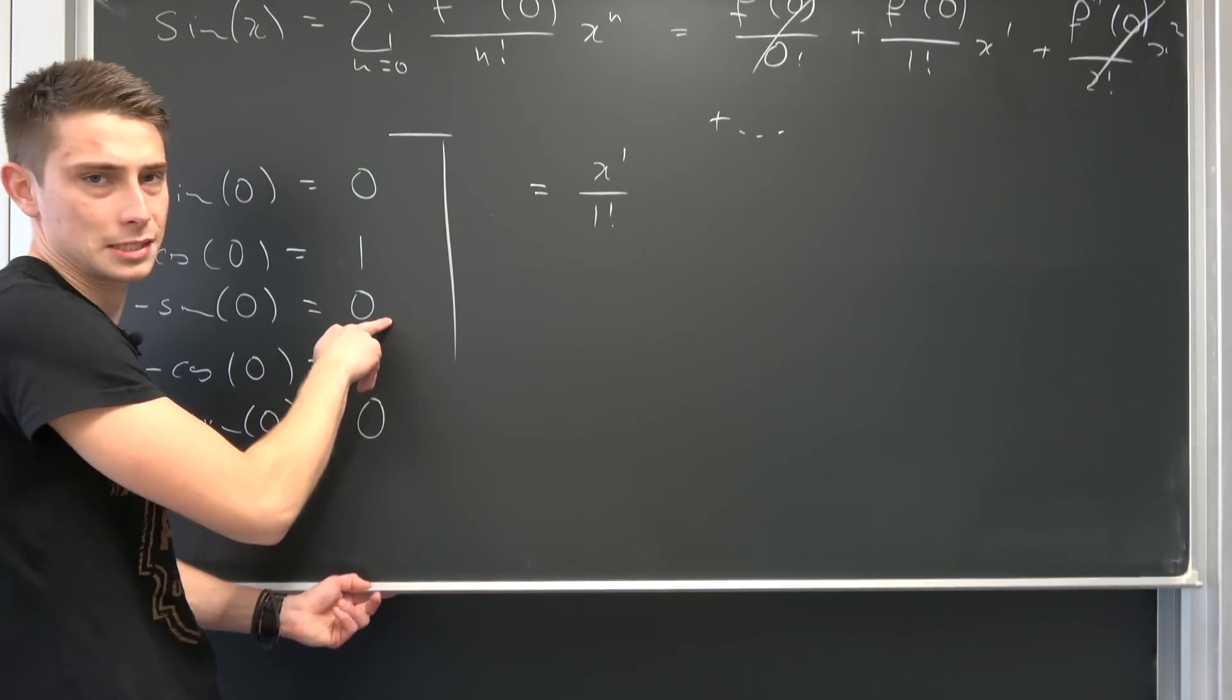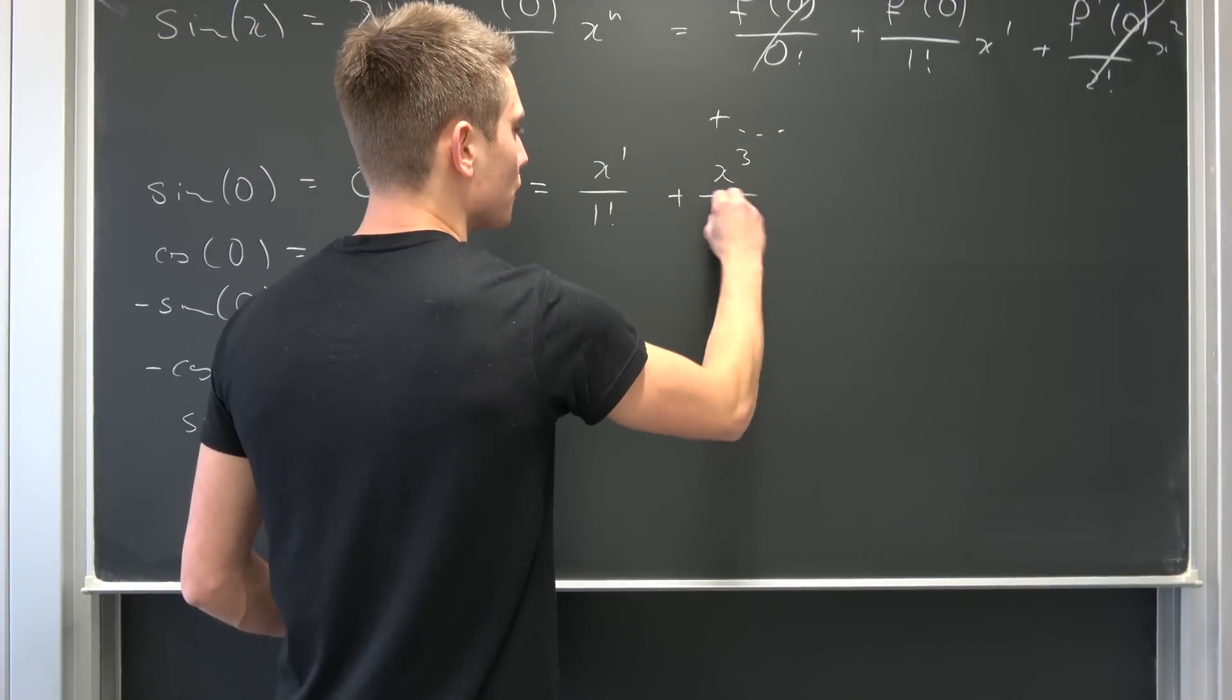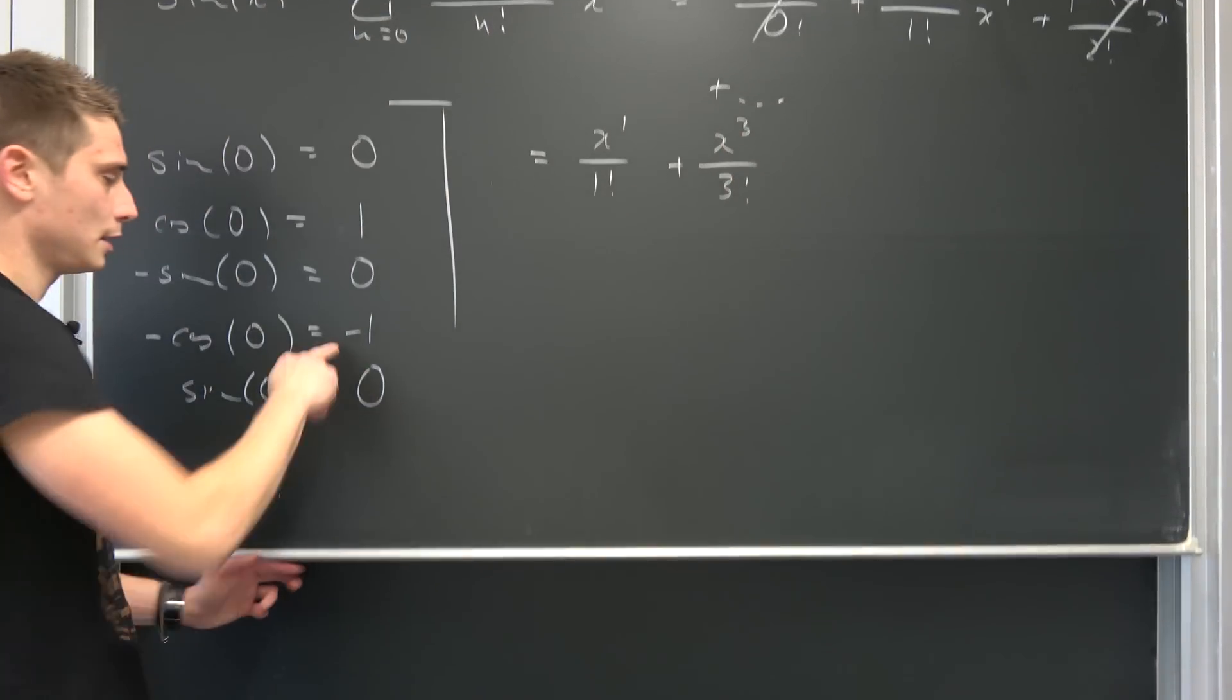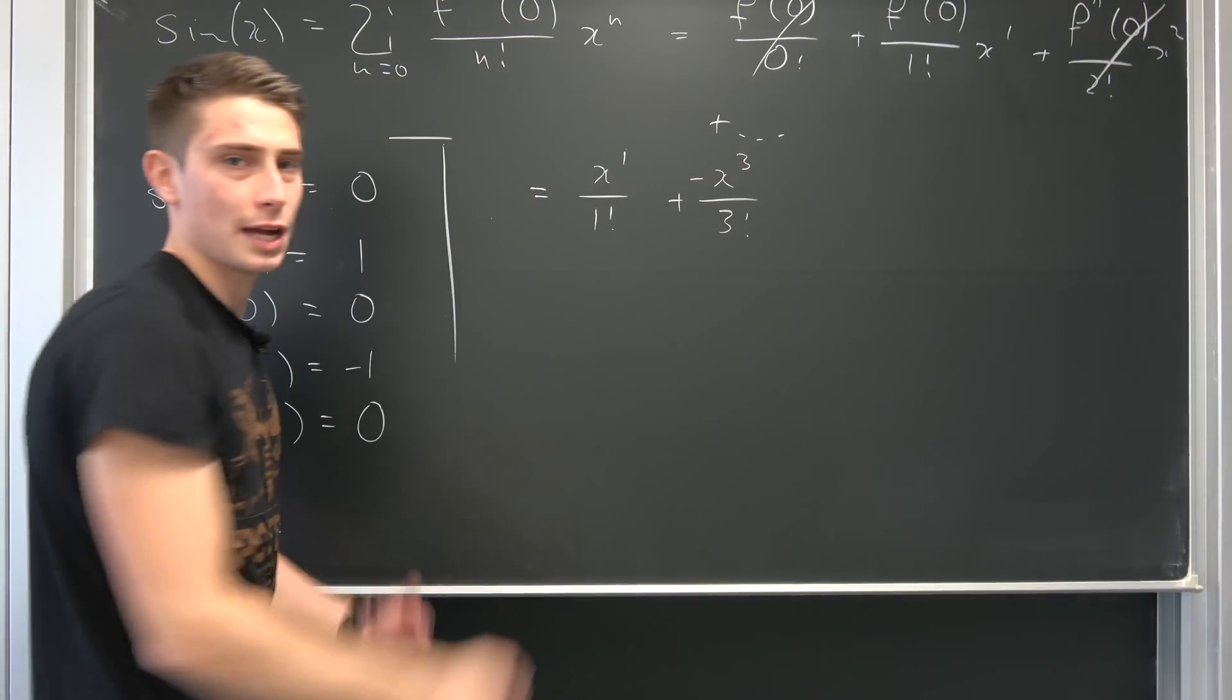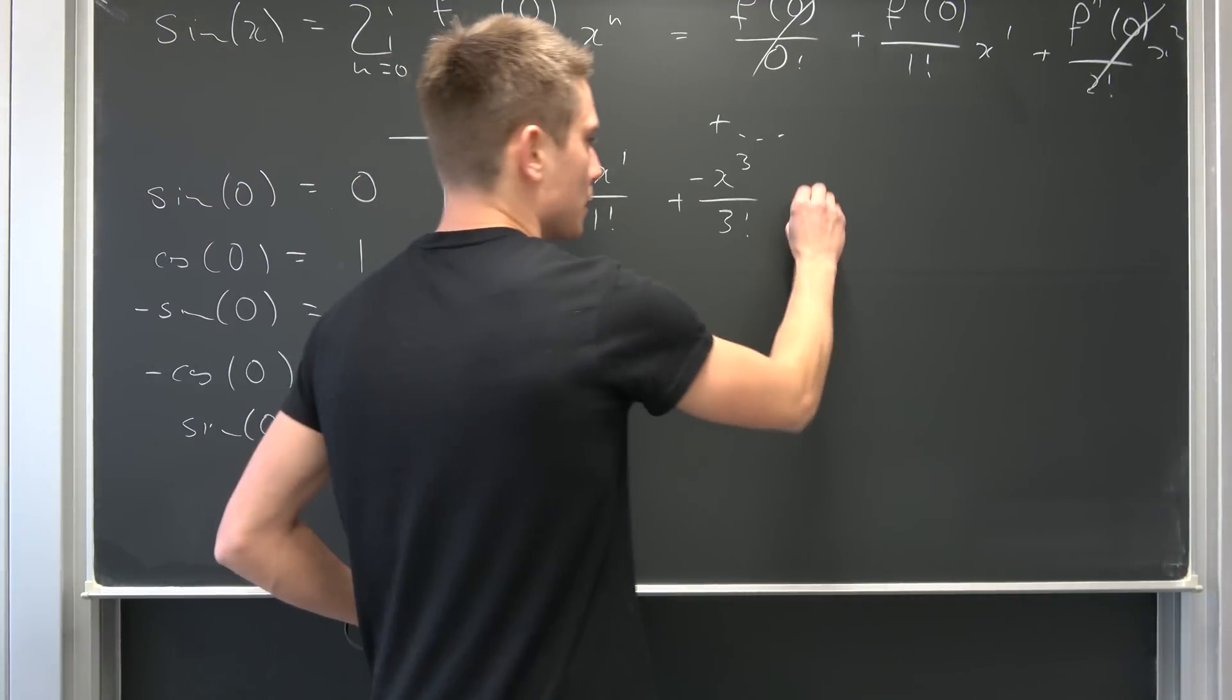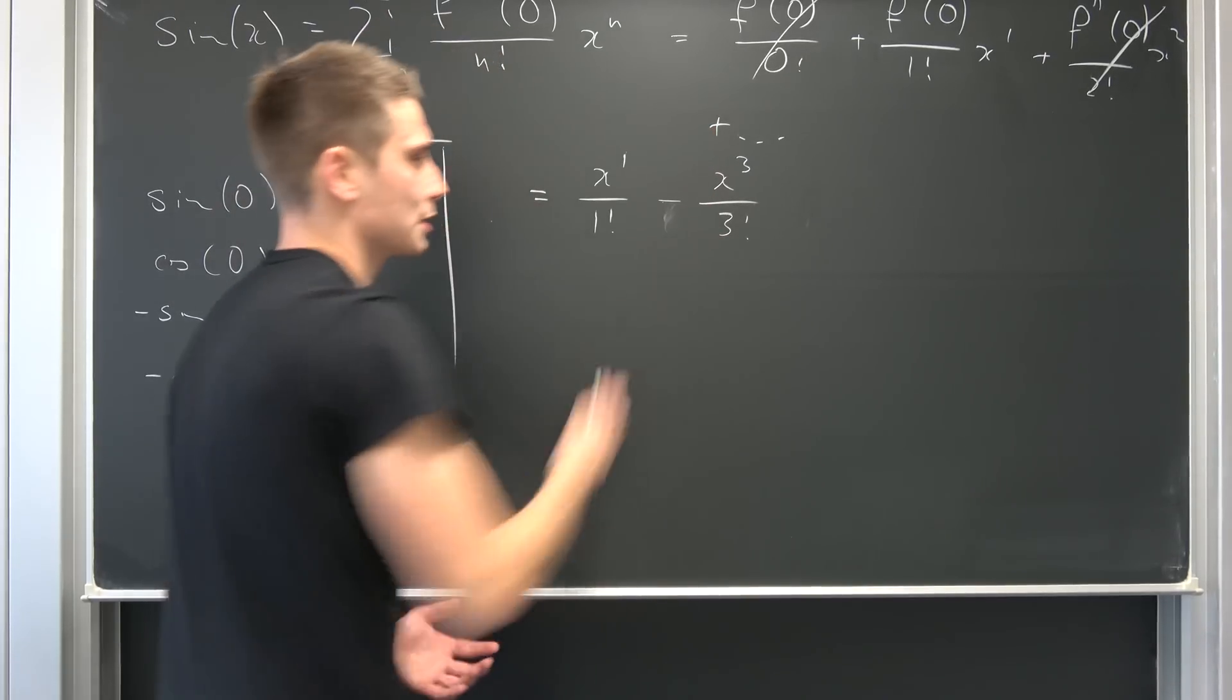Second derivative is zero evaluated at zero. Third derivative, so plus x to the third power over three factorial. This derivative is negative one. So we have negative x to the third power. And we can move on. So the next term would vanish. Why not rewrite it like this right here?